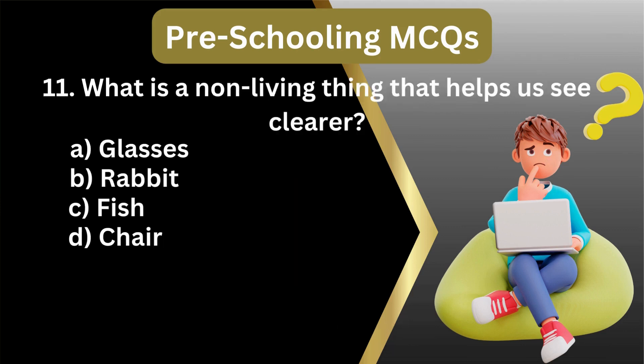11. What is a non-living thing that helps us see clearer? A. Glasses, rabbit, fish, chair. Answer: A. Glasses.